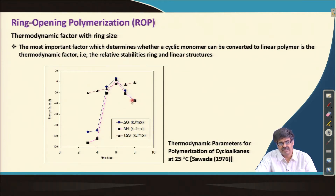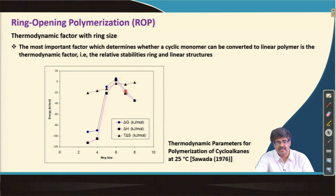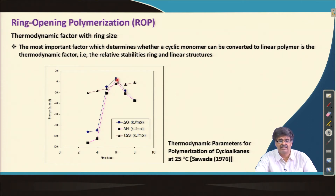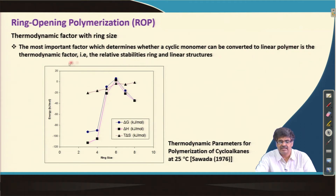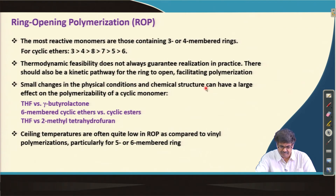For larger rings like 7 or 8 members, there is also associated ring strain making ring opening thermodynamically feasible. But when the ring size is 5, 6, or 7, the tendency of ring opening becomes less and less — especially for the 6-membered ring, which is normally difficult to polymerize by ring opening. The most important factor determining whether a cyclic monomer converts to a linear polymer is thermodynamic: the relative stability of the ring versus the linear structure. The most reactive monomers are those containing 3- and 4-membered rings due to much higher ring strains.